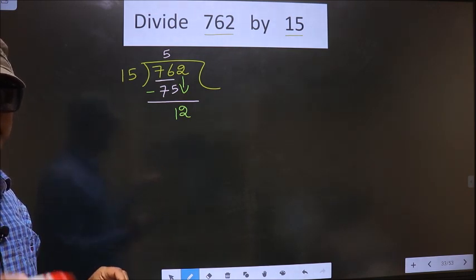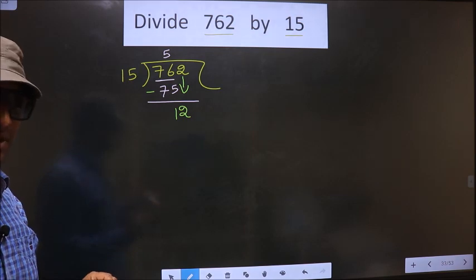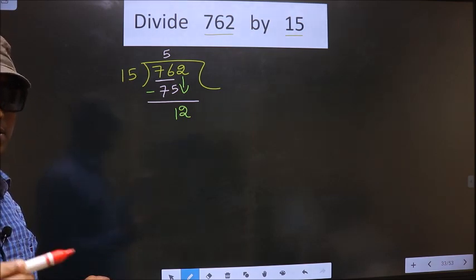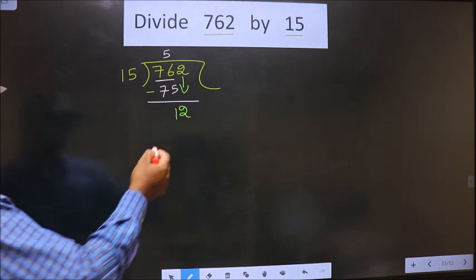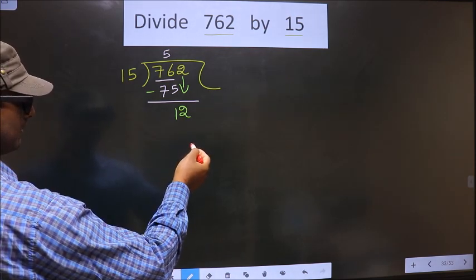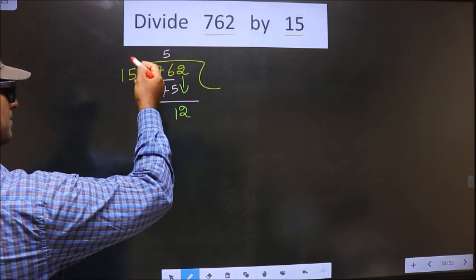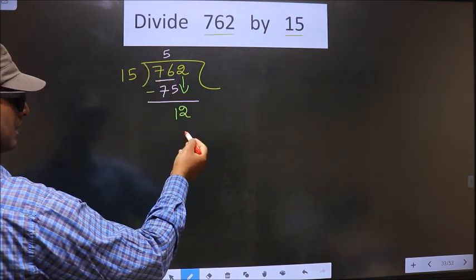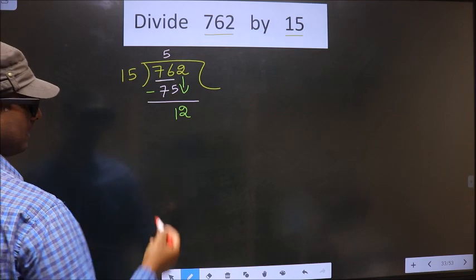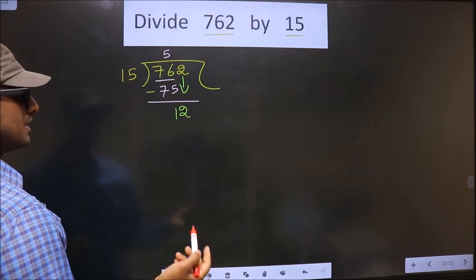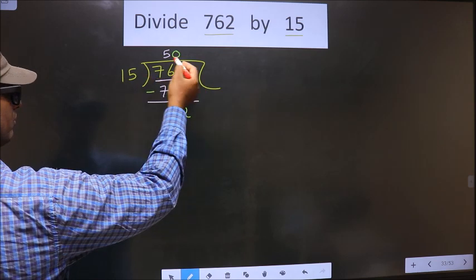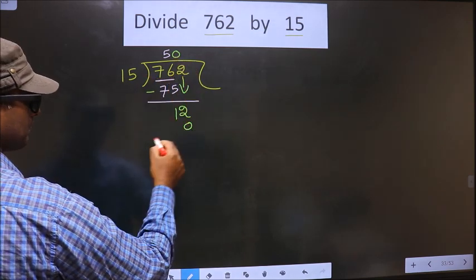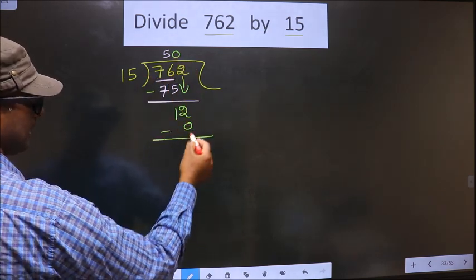Instead, what you should think of is: to this number, what should you multiply to get a number here? If we multiply by 1, we get 15, but 15 is larger than 12. So what we do is we multiply by 0. 15 into 0 is 0. Now you subtract, you get 12 here.